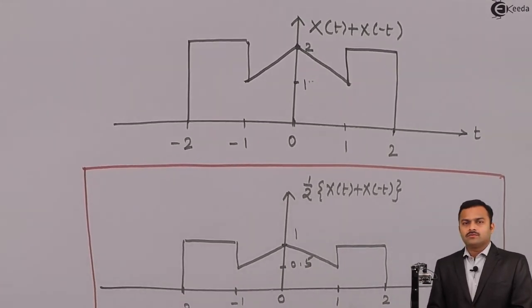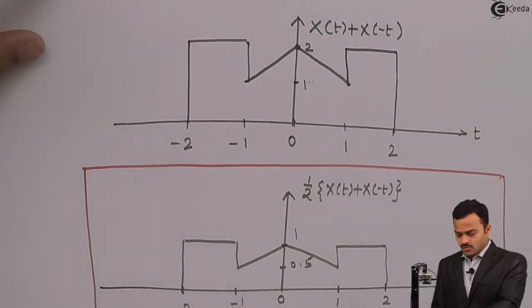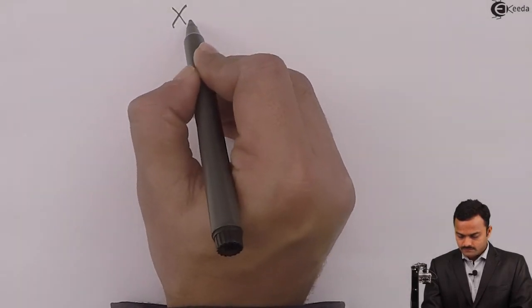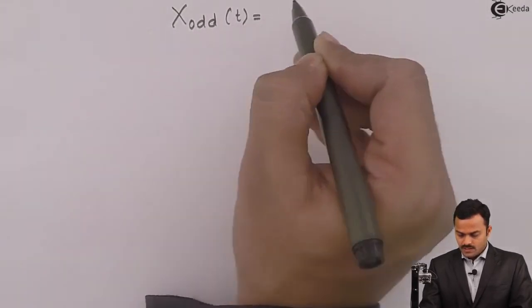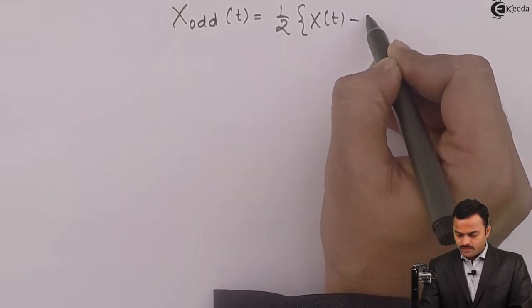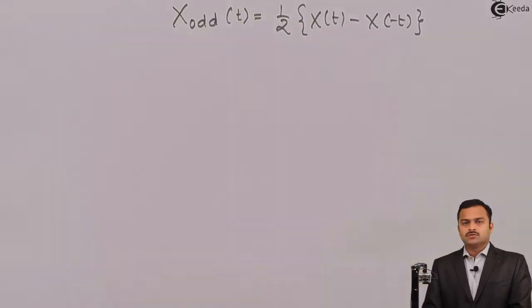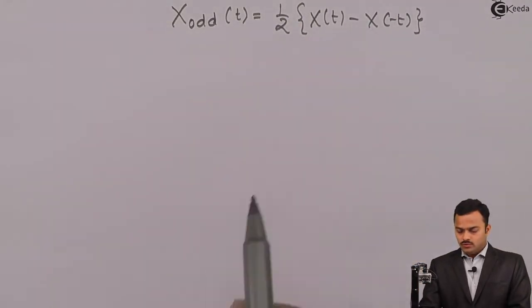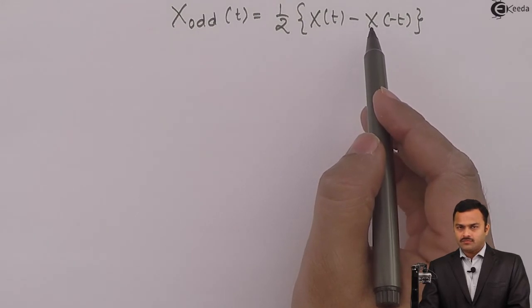Similarly, we can find out the odd part. For that we need to write the equation: the odd part of any signal is given as half bracket x of t minus x of minus t. Now we need to do the calculation x of t minus x of minus t.